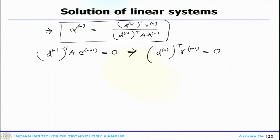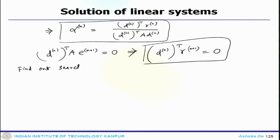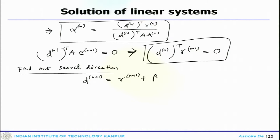If the search directions d_0, d_1, d_2, ..., d_n are known, then alpha_n can be straightforwardly calculated. The task is to find the search direction. Once the search direction is known, alpha_n can be calculated. To find the search direction, one can write the expression d_{n+1} = r_{n+1} + beta_n d_n. The A-orthogonality requirement of the d vectors implies that d_{n+1}^T A d_n must equal 0.